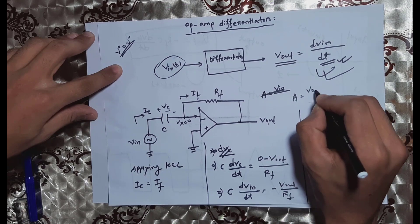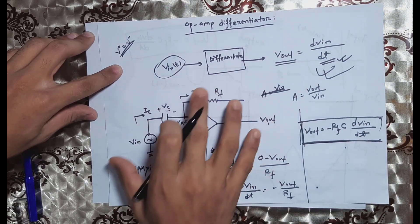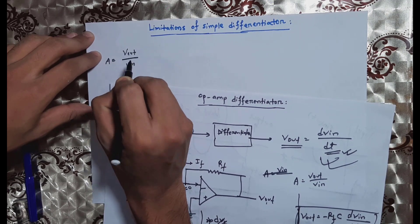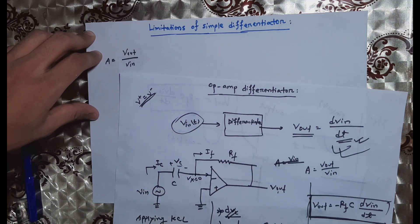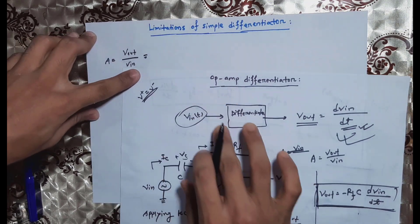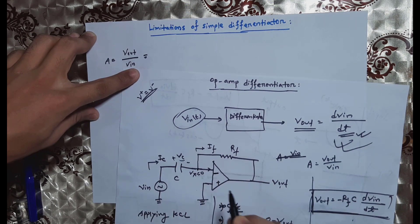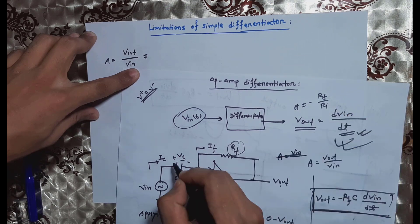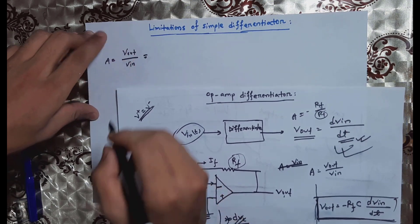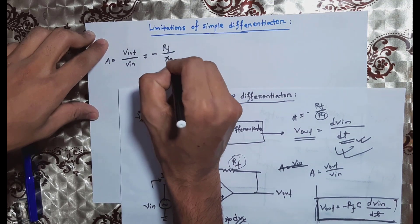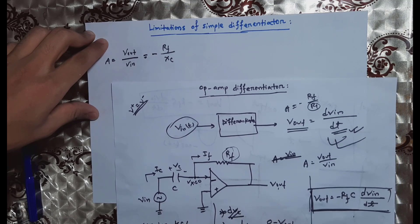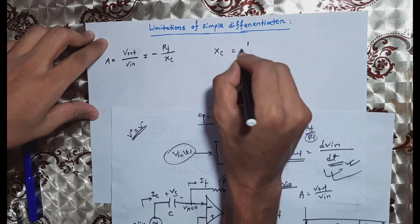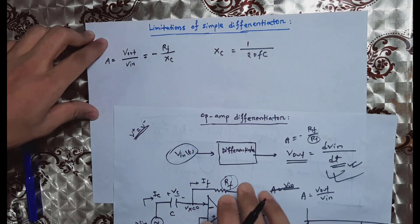Let's look at the gain, Vout divided by Vin. For an inverting amplifier, gain is minus Rf divided by R1. For the differentiator, the feedback element is Rf and the input element is the capacitive reactance Xc. So the gain becomes minus Rf divided by Xc, where Xc is equal to 1 divided by 2πfc.